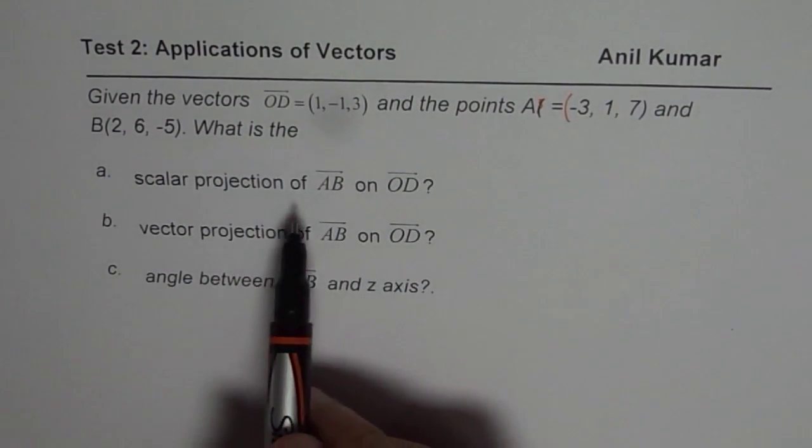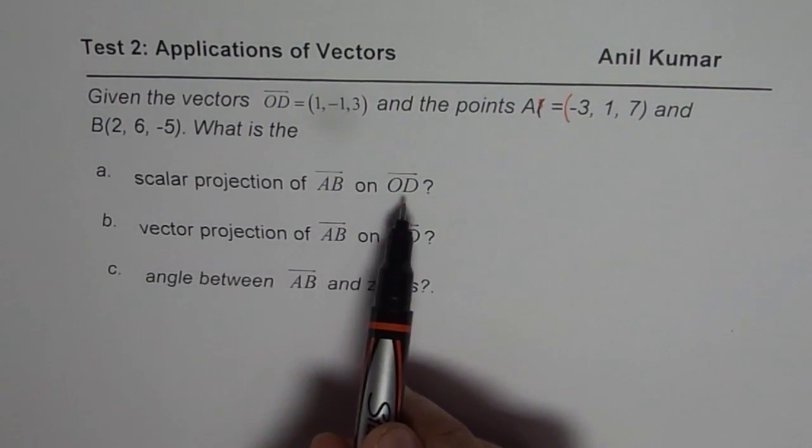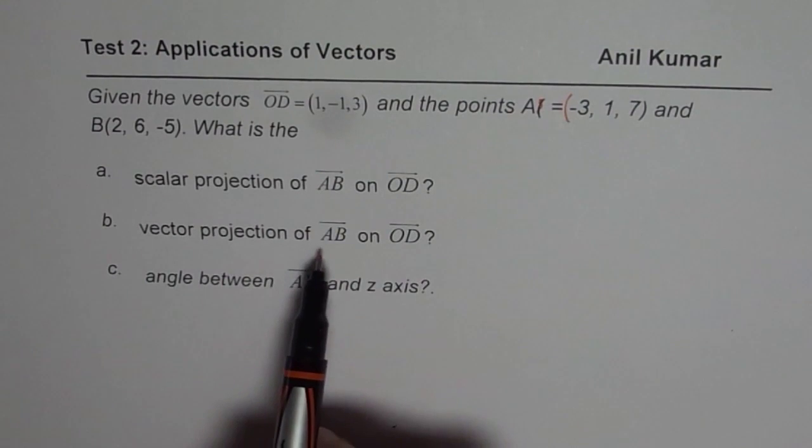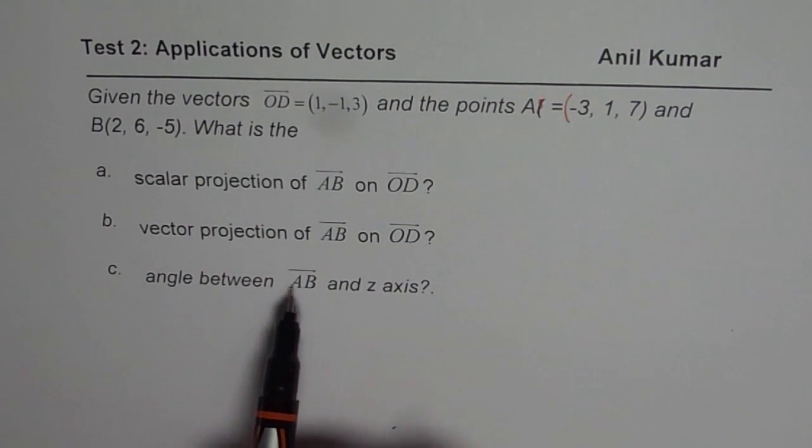What is the scalar projection of AB on OD, vector projection of AB on OD, and angle between AB and Z axis?